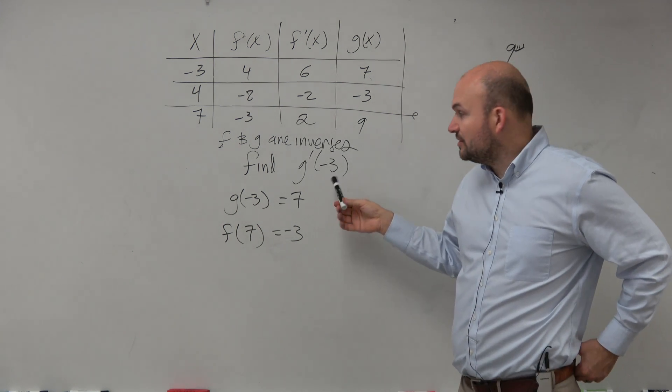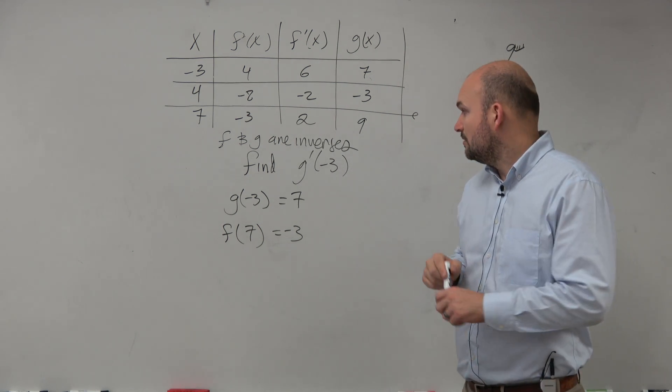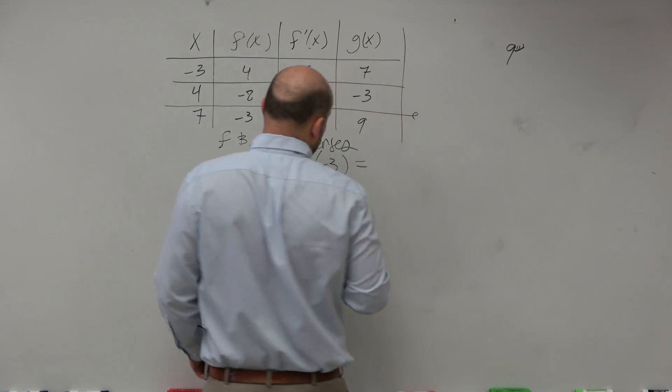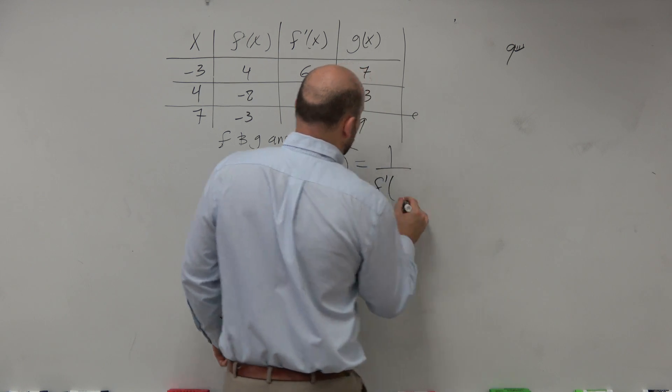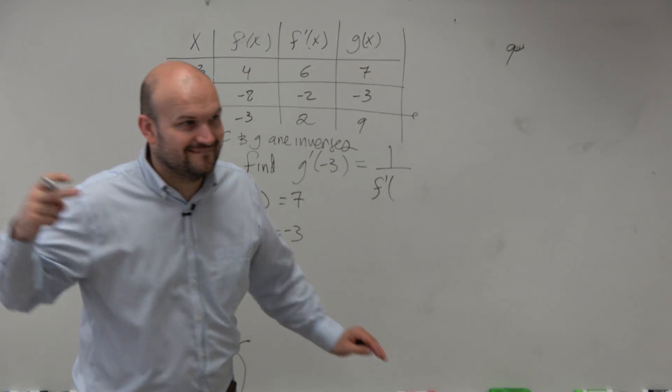But if I want to find g prime of negative 3, that's what I'm equaling to. We know that that is going to be equal to the reciprocal of f prime of what? 7.